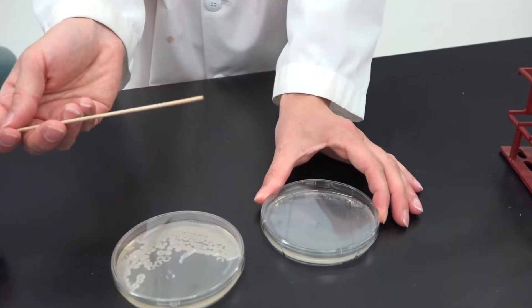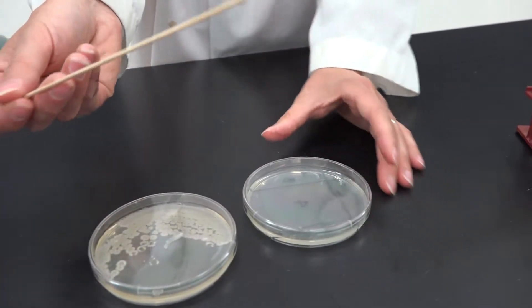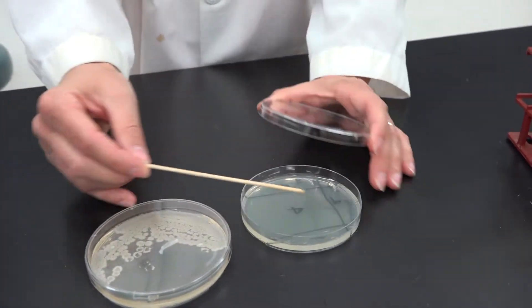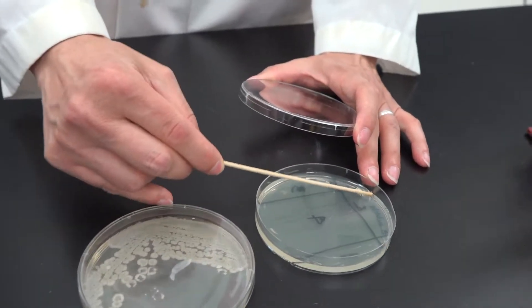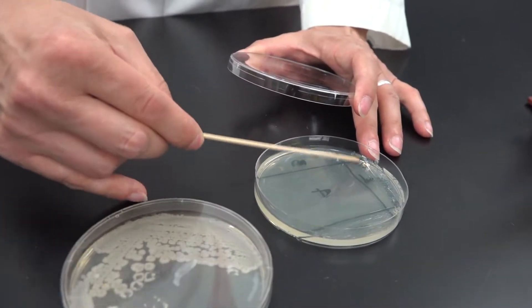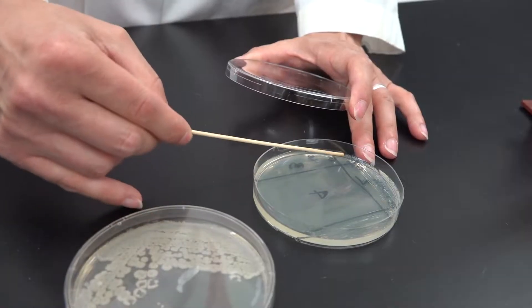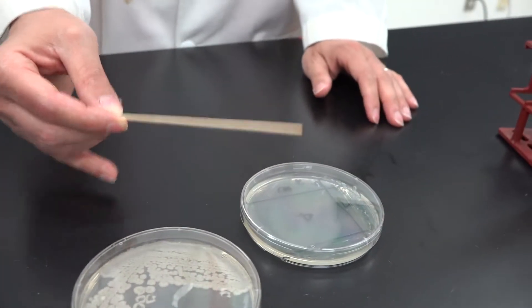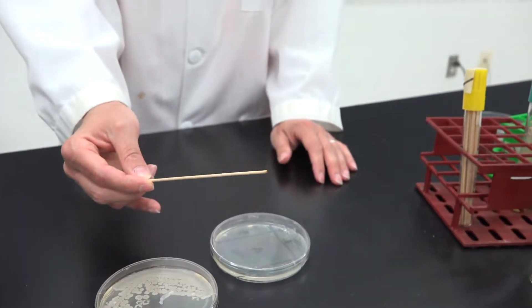Without touching any new bacteria, turn the plate 90 degrees. Take the stick, touch the bacteria at the corner of quadrant one, and spread them evenly across quadrant two. Then discard that stick.